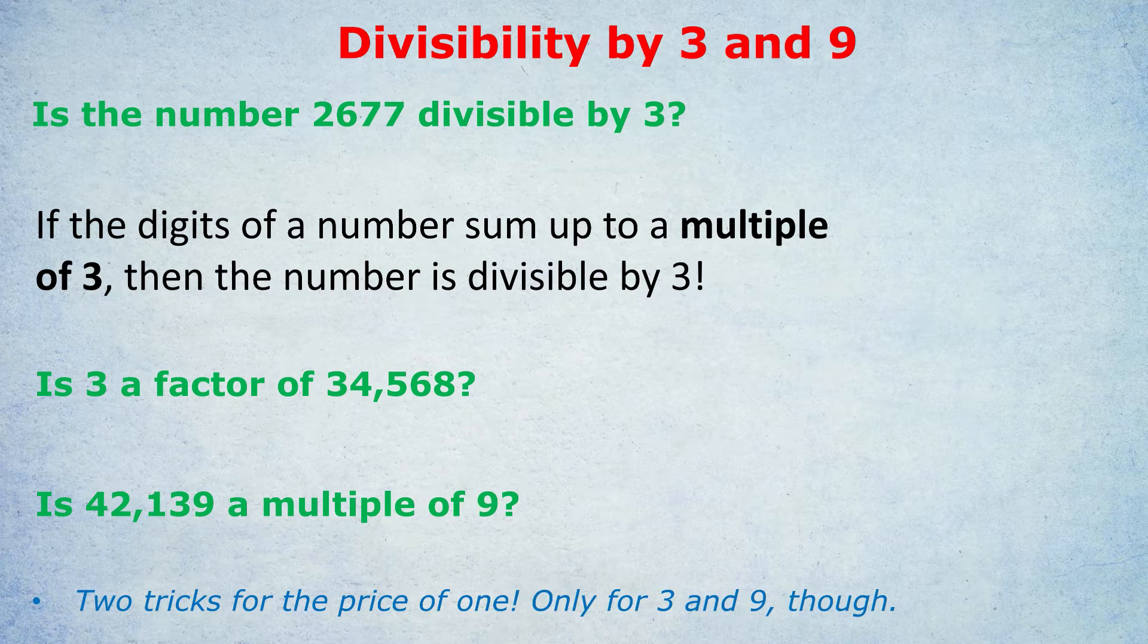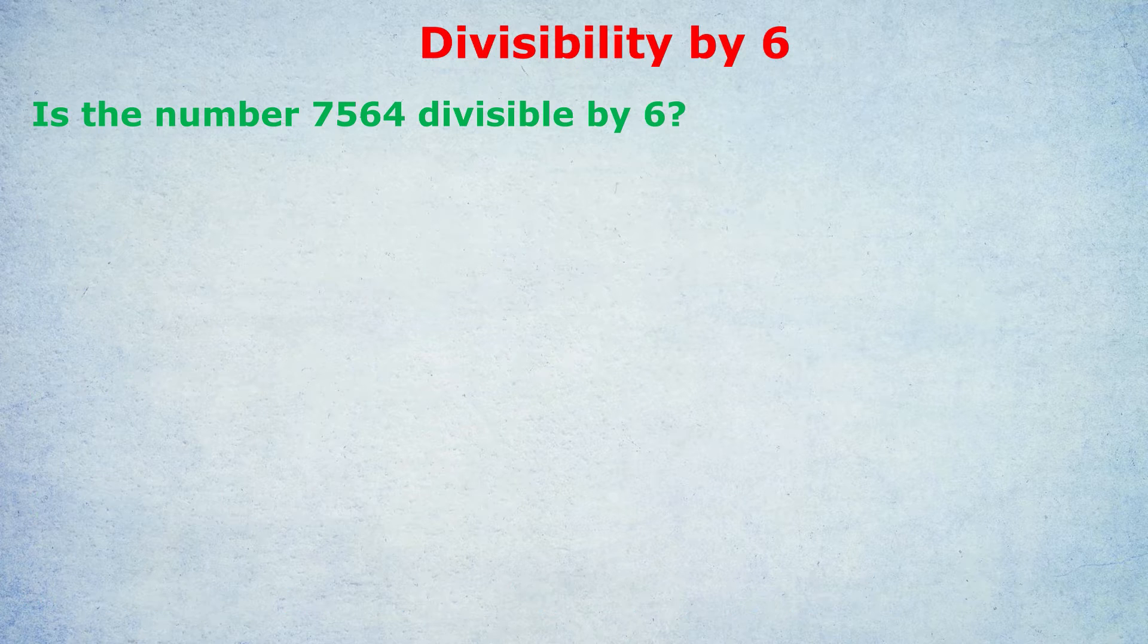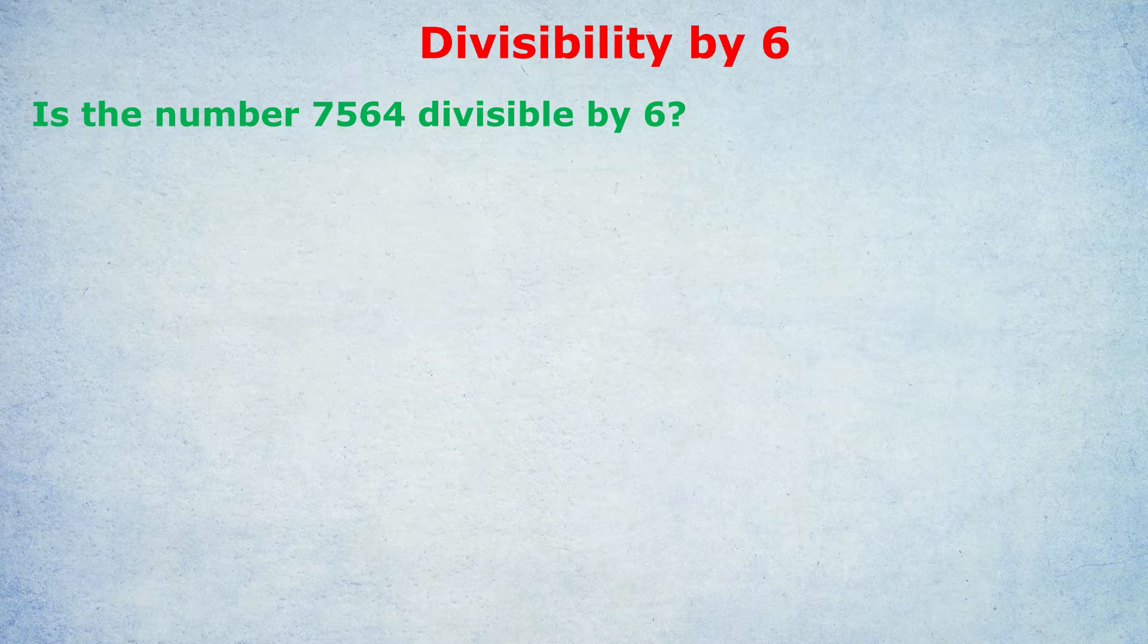Now I want to move on to divisibility by 6, which is intimately related to divisibility by 3. You might even be able to guess the trick. To find out if a number is divisible by 6, you'd first have to check if it's divisible by 3 and then check if it's even. If it's divisible by 3, 3 is a factor. And if it's even, 2 is a factor. And if both 3 and 2 are factors, then 6 must be a factor. It must be divisible by 6. And that's the trick.